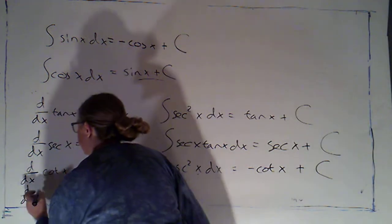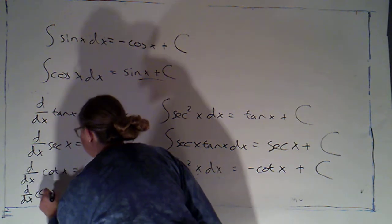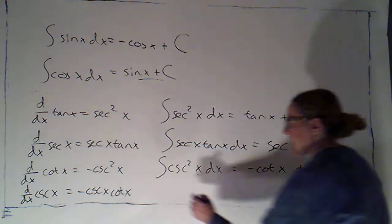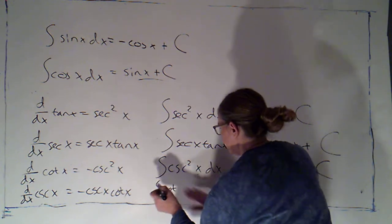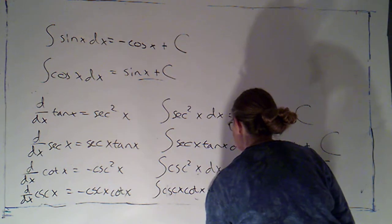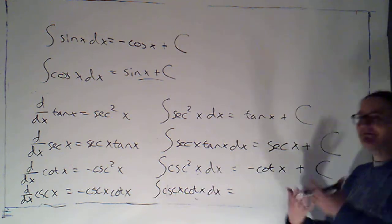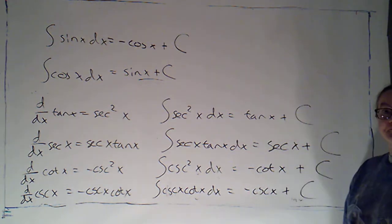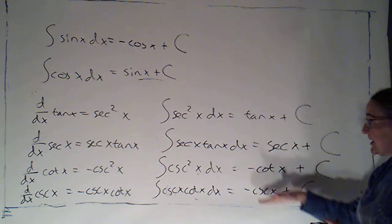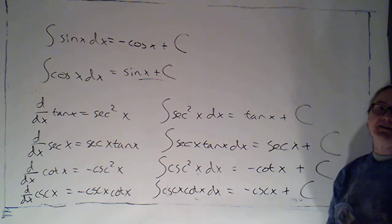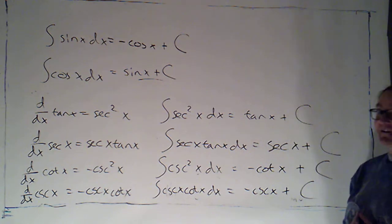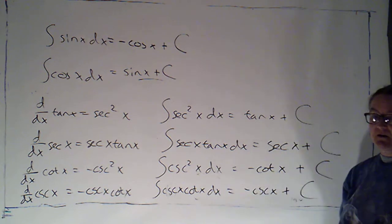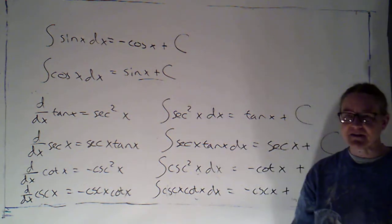Similarly, the derivative of cosecant of x is negative cosecant of x cotangent of x. So the integral we'll generally see is cosecant x times cotangent x dx, and that's the opposite of the derivative of cosecant, so we get negative cosecant of x plus c. There are six trig integrals we get from knowing the derivatives of the six trig functions — it's just that we're integrating the functions that are the derivatives, or in some cases the opposite of the derivatives, of those trig functions.